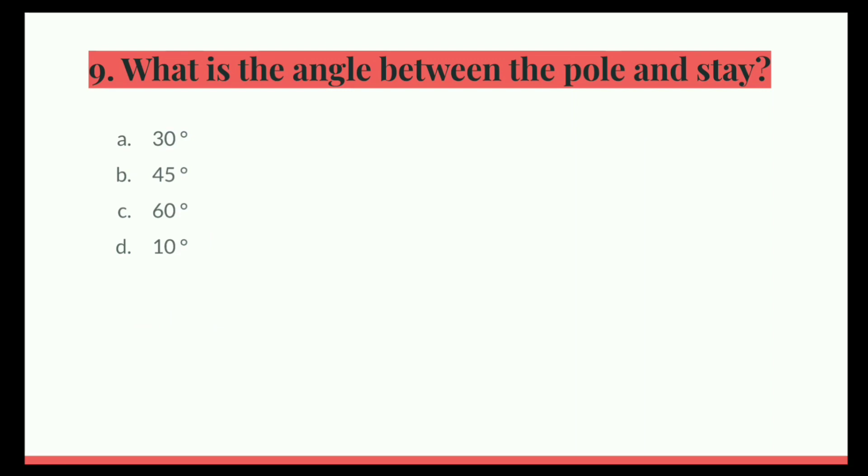Next question. What is the angle between the pole and stay? Option A, 30 degree. B, 45 degree. C, 60 degree. D, 90 degree. The correct answer is 30 degree.